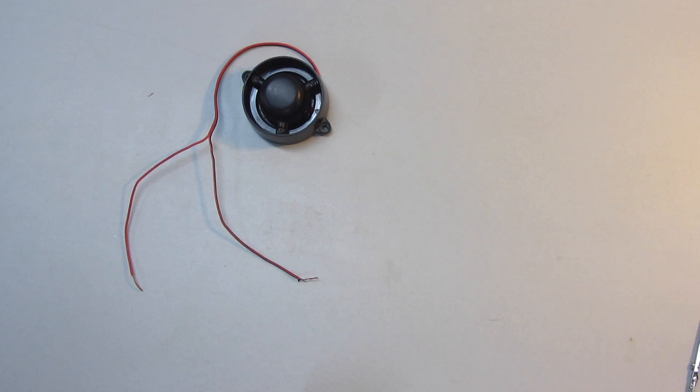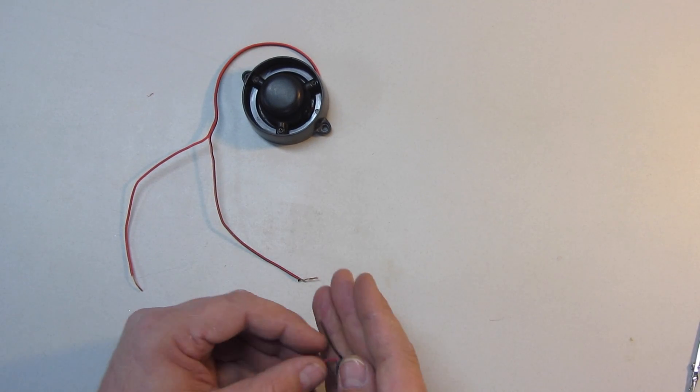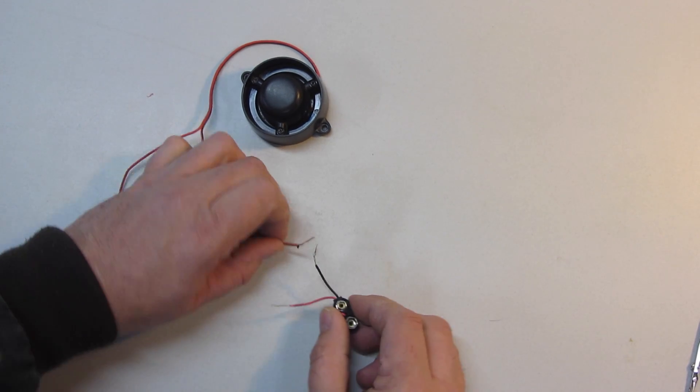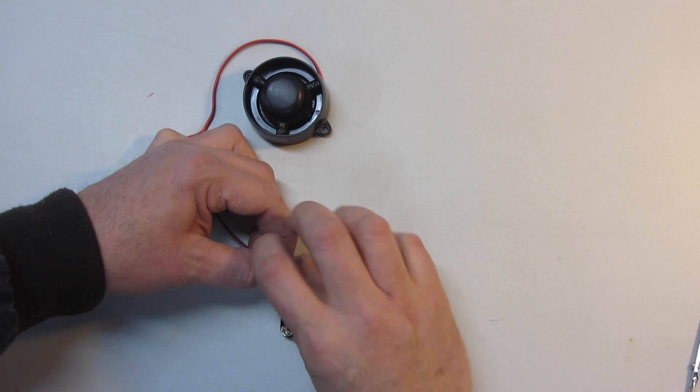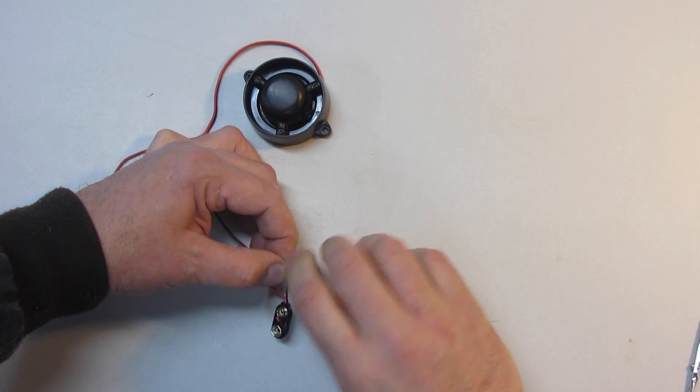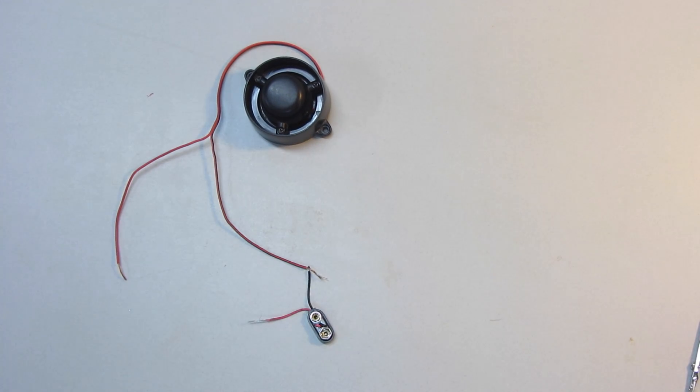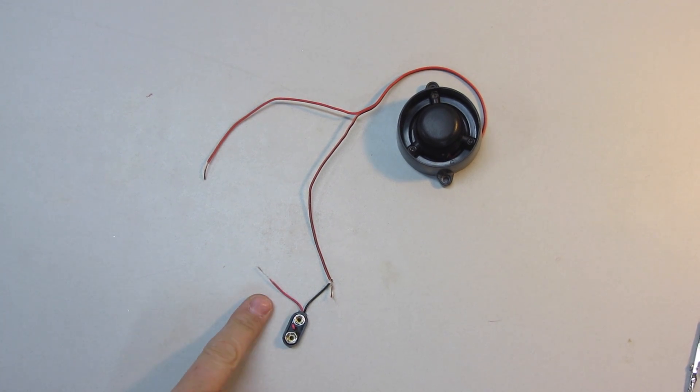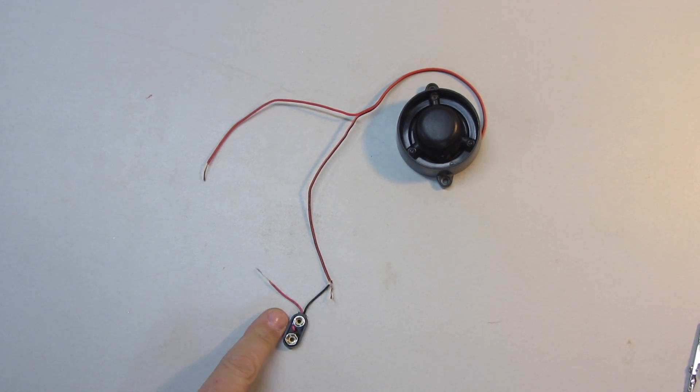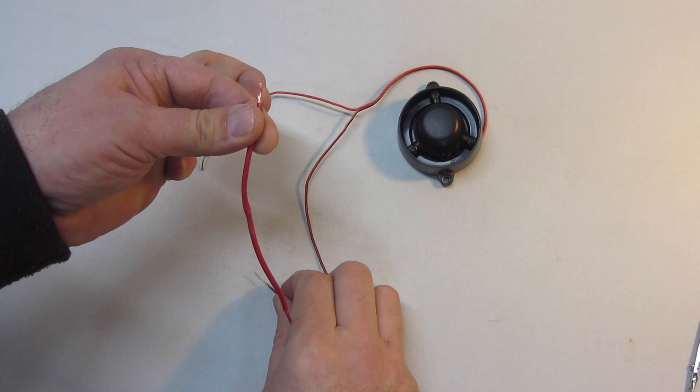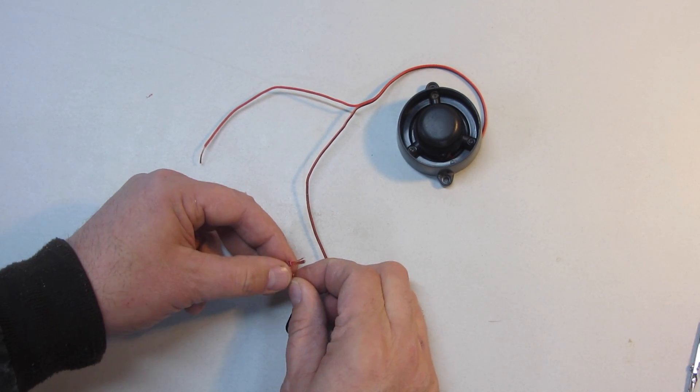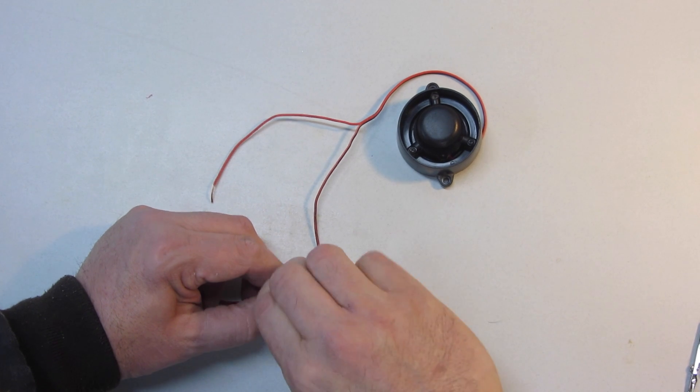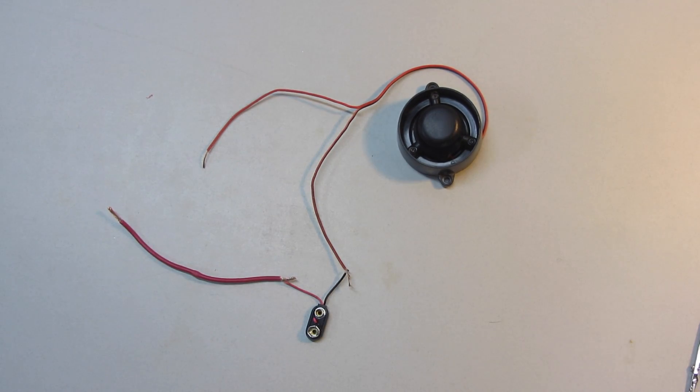We're going to start with the buzzer. One wire off the buzzer will be twisted to one wire off the battery terminal connector. Just like that. Now we have a wire that's loose coming off of the battery terminal connector. I'm going to put my extra length of wire onto that one. So we'll twist those together. Just like that.